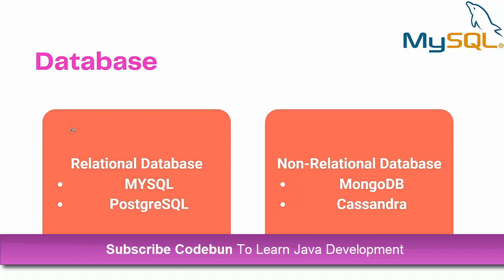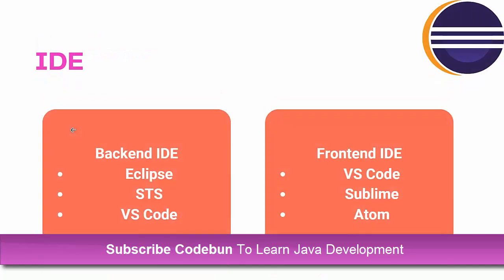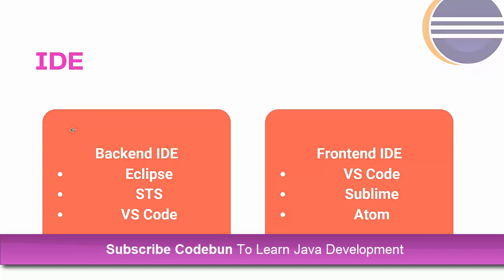For IDEs, most back-end IDEs are similar. You can write back-end code in Eclipse, Spring Tool Suite (STS), or VS Code. Eclipse is the most commonly used IDE in the industry for Java back-end, so you should know how to operate Eclipse, create plugins, and install additional software to enhance it. For front-end code, Visual Studio Code or Sublime Text are the most usable IDEs.